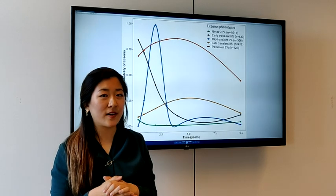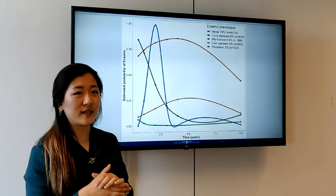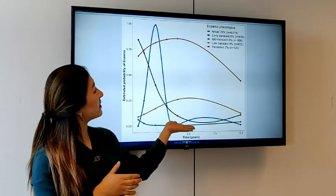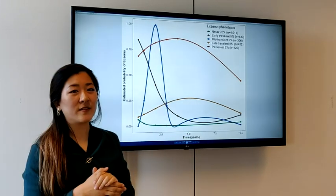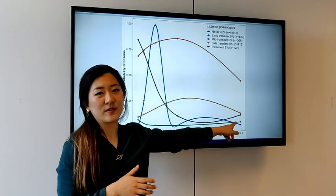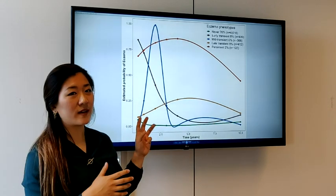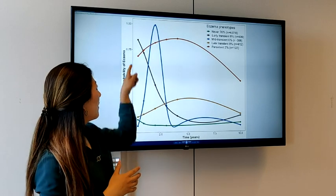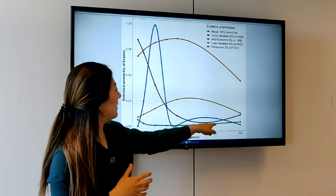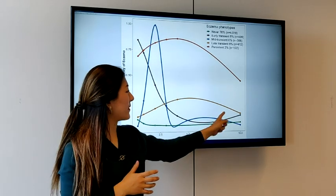Our main findings are that we found five eczema phenotypes, as you can see here. The biggest group were the children in a never-eczema phenotype group, so those have very low probability of eczema. And then there are three other small groups: early-transient eczema, mid-transient eczema, and late-transient eczema.